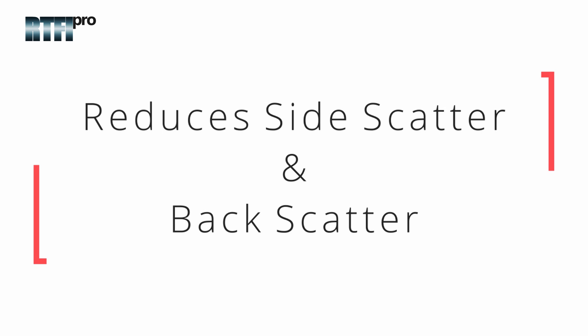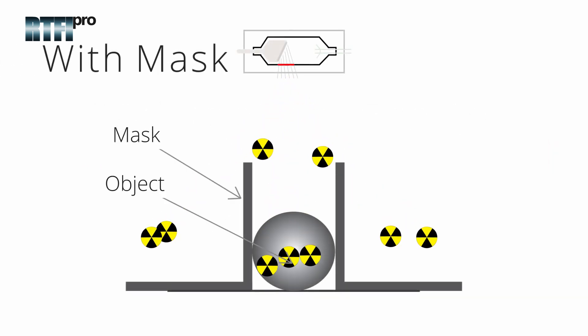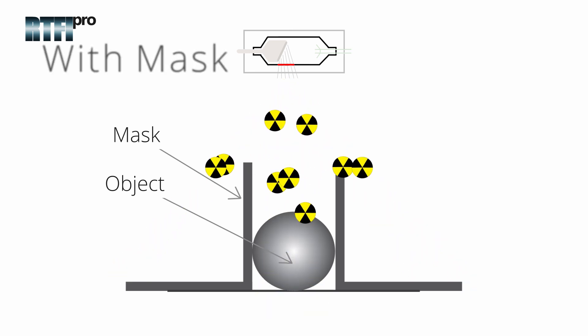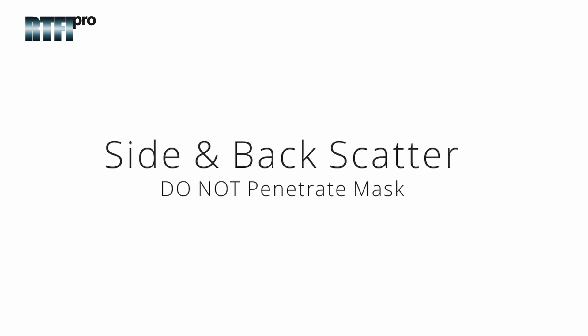As shown in the image, the round bar is masked from both sides and the floor and only the primary radiation beam is being absorbed through the object as both side and back scatter radiation will not penetrate the mask.